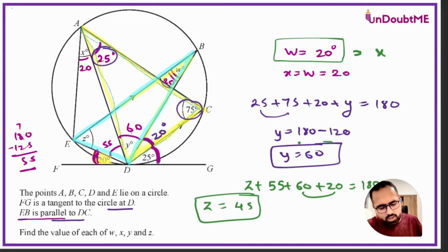So finally we got all four values: x and w both are 20, y is 60, while z is 45. You can try watching this video one more time if what I did in this is a bit unclear. Maybe after practicing twice or thrice you will get more clarity in these types of questions. So try it out.